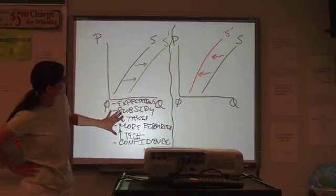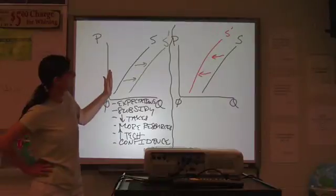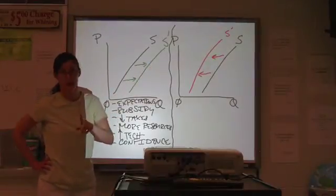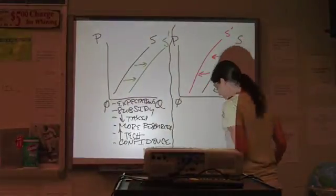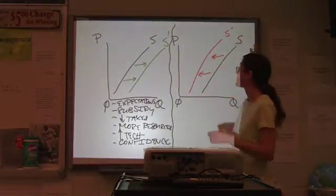So all of these things can increase supply, which means sliding it to the right, not up and down. It's away from zero. What are some things that can decrease supply?